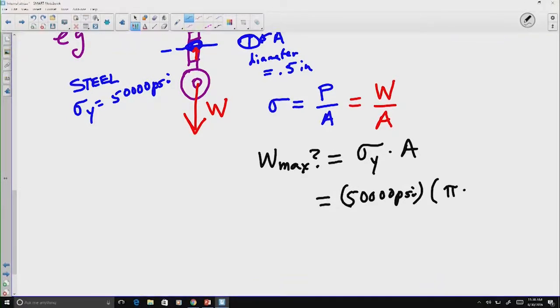And our area in this case would be pi r squared. So, pi times a radius, which is a quarter of an inch squared, or if I do the math, 9,817 pounds. Noticing that the square inch and the inches squared are going to cancel out.